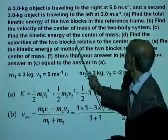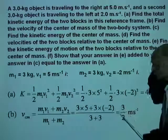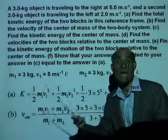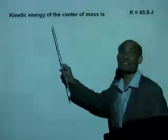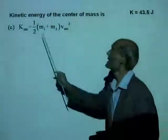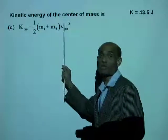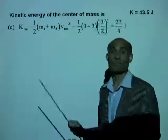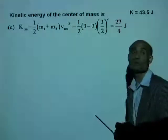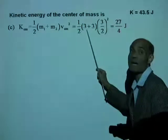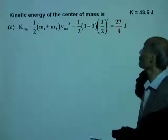Part C: find the kinetic energy of the center of mass. We know the velocity of the center of mass and we know the mass of the center of mass, which is M1 plus M2. The kinetic energy of the center of mass is one-half (M1 plus M2) times V_cm². That would be one-half times (3 plus 3) times (3/2)². That gives you 27/4 joules.